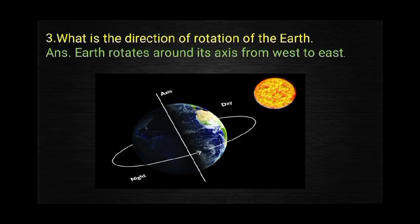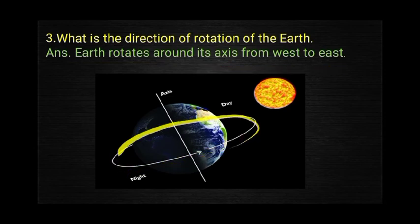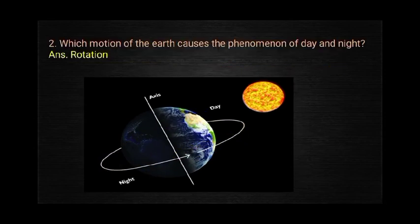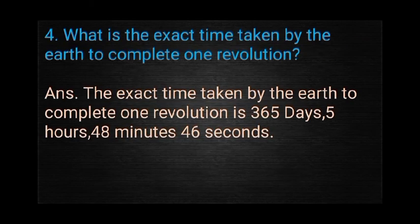Question 3: What is the direction of rotation of the Earth? The Earth rotates around its axis from west to east.